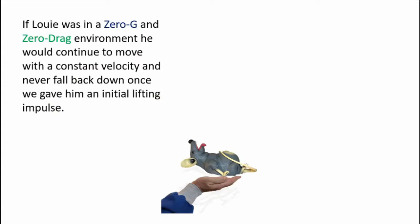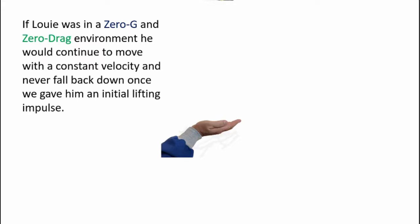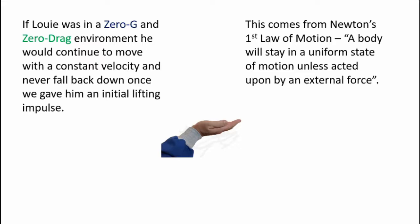Now if Louie was in a zero g and zero drag environment, he would continue to move with a constant velocity and never fall back down once we gave him initial lifting force. This comes from Newton's first law of motion. A body will stay in uniform state of motion unless acted upon by an external force.